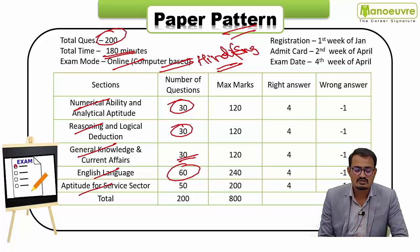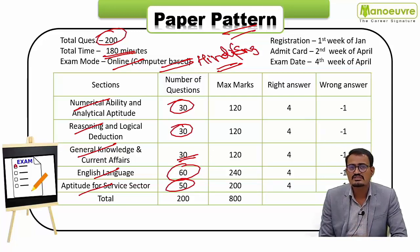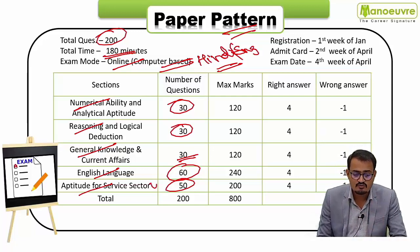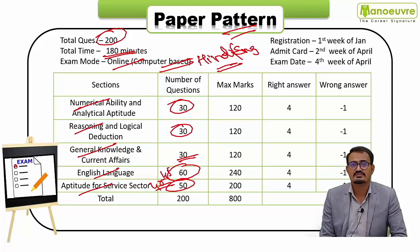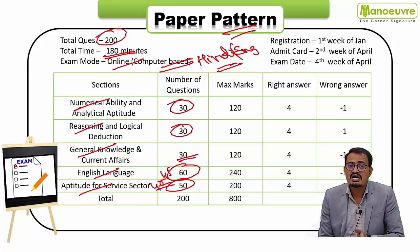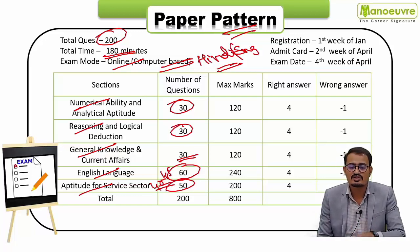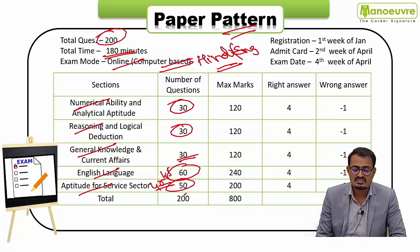Aptitude for Service Sector is another scoring section with 50 questions — just common sense applied. You can score 40 to 45 marks easily in this section. Look at all the sections, analyze which are your strong zones and which are weak zones, and work accordingly. Overall, 200 questions for 800 marks total.